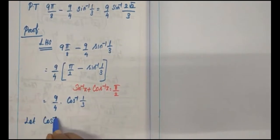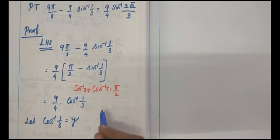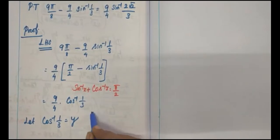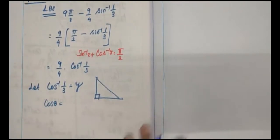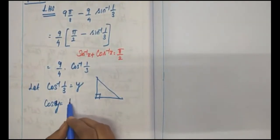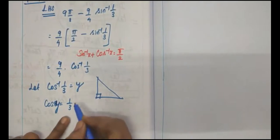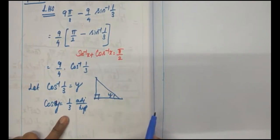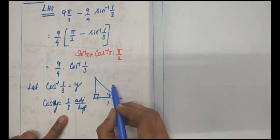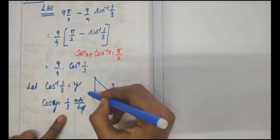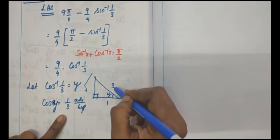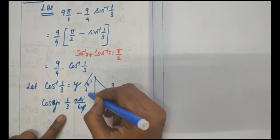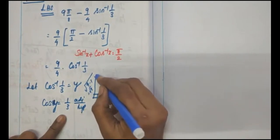Let cos⁻¹(1/3) equal some angle y. Draw a right angle triangle. cos(y) equals 1/3, which is adjacent over hypotenuse. So adjacent is 1 and hypotenuse is 3. The unknown side is √(9 − 1) = √8 = 2√2.